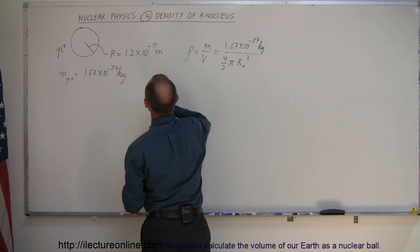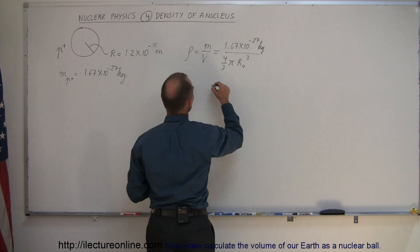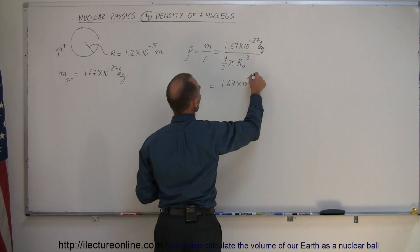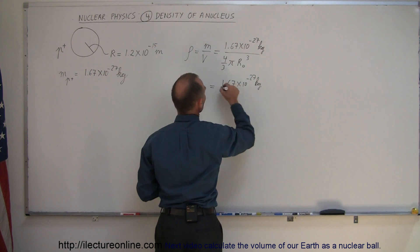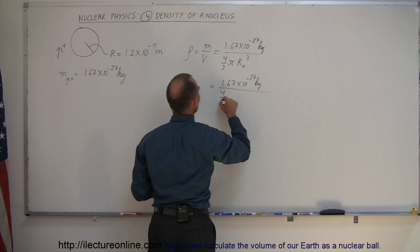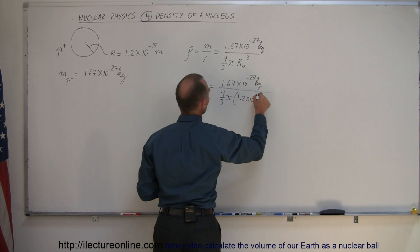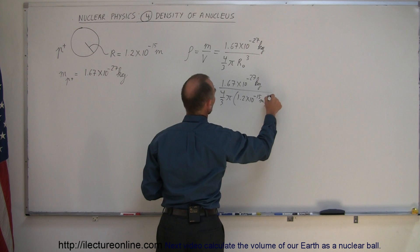cubed, and the radius being 1.2 times 10 to the minus 15 meters, we could say this equals 1.67 times 10 to the minus 27 kilograms divided by four-thirds pi times 1.2 times 10 to the minus 15 meters cubed.